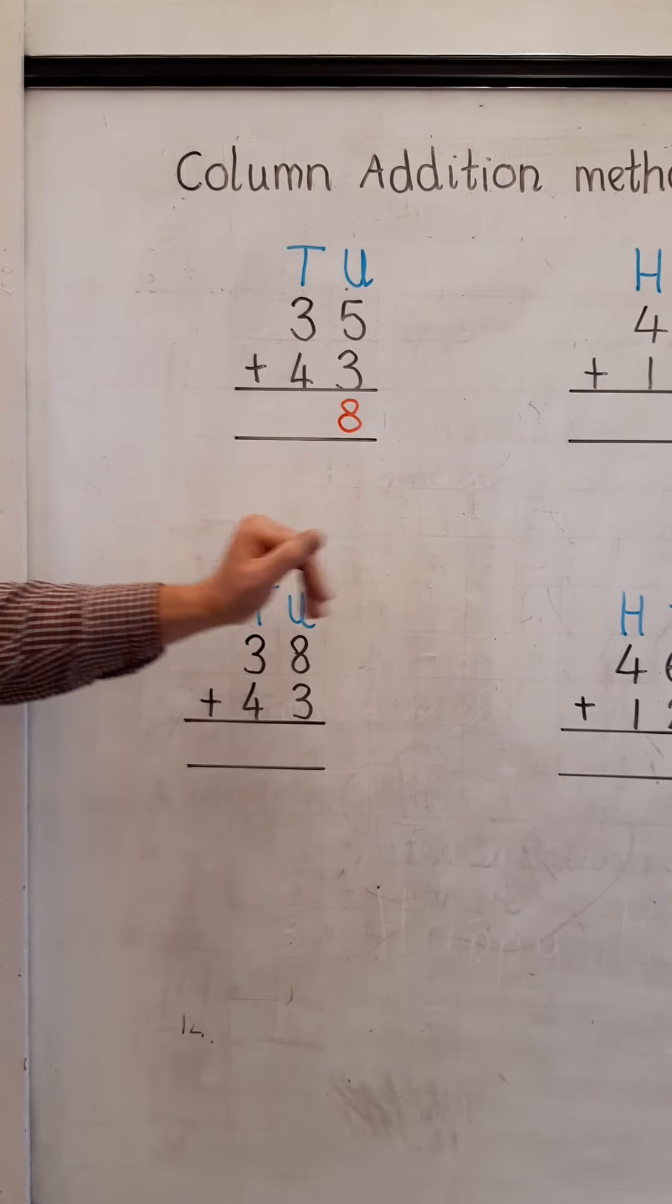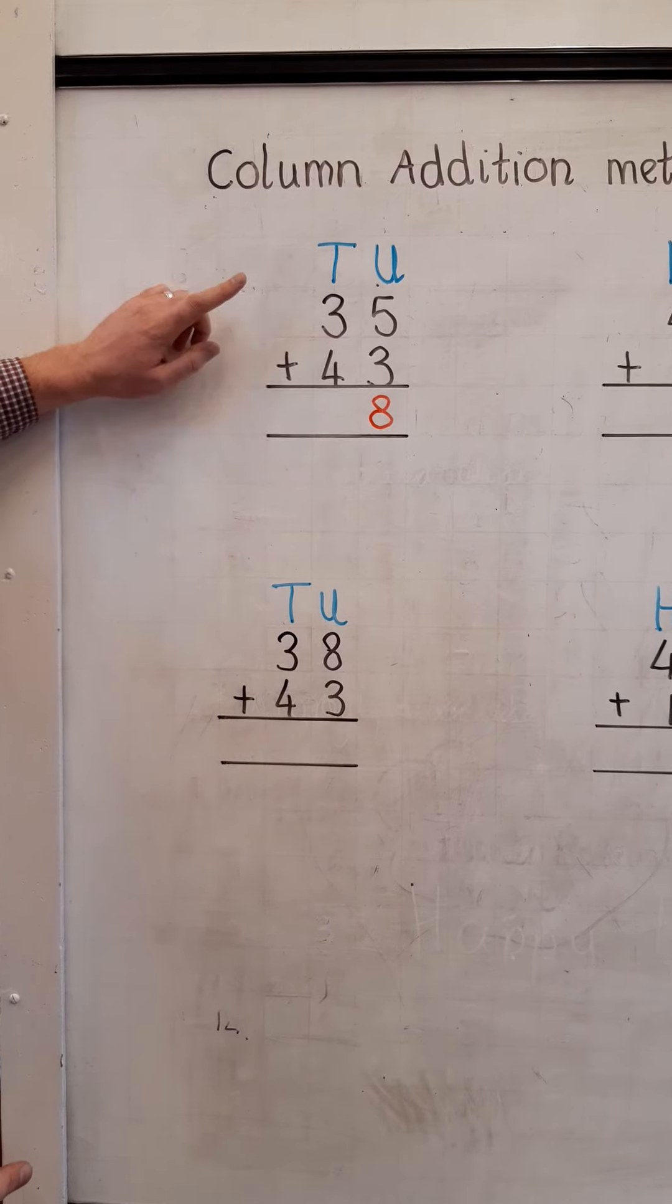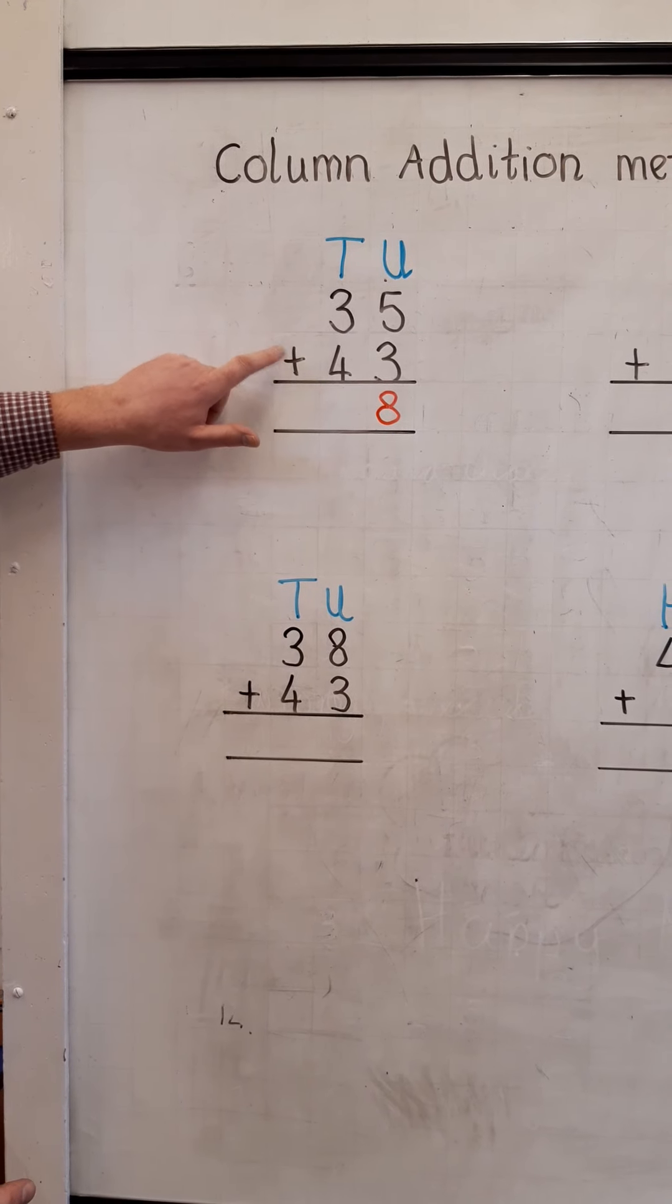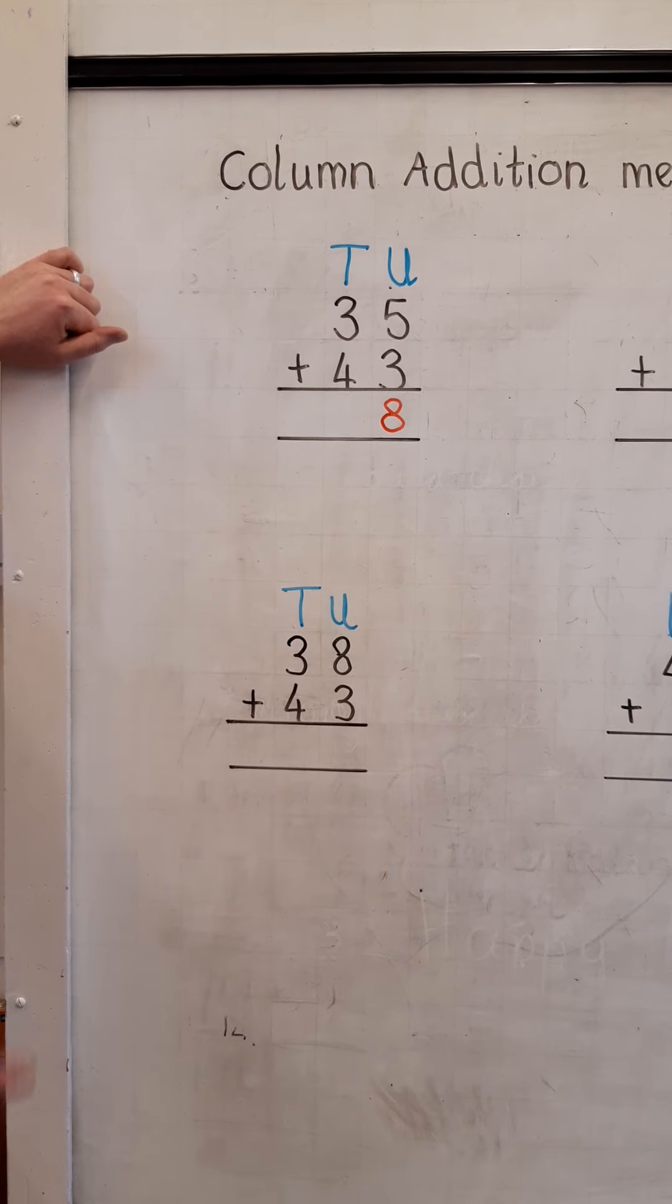We're finished with the units place, we now move to the tens place and we simply add the tens. We have four tens, add three tens, gives us a total of, you've guessed it, seven tens and an answer of 78.